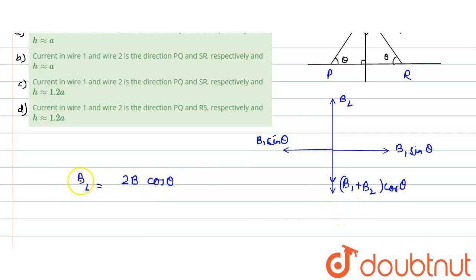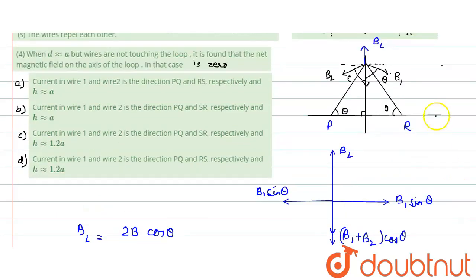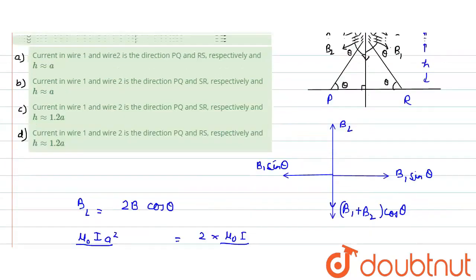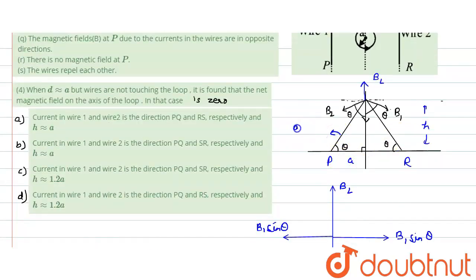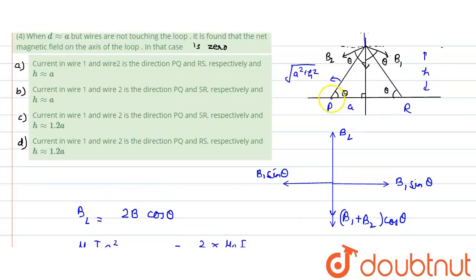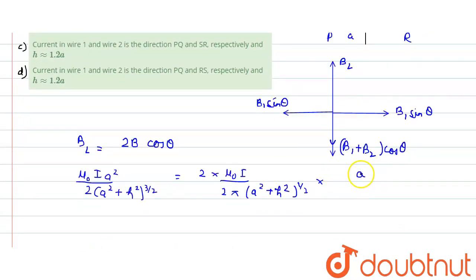Because B1 and B2 would be equal. The magnetic field due to the loop on the axis is given as mu-naught i a-squared divided by 2 times (a-squared plus h-squared) to the power 3/2, where h is the height — the distance from the axis. The magnetic field due to a current-carrying conductor equals mu-naught i divided by 2 pi times the distance, which is the square root of (a-squared plus h-squared). Multiplied by cos theta, where cos theta equals a divided by the square root of (a-squared plus h-squared).